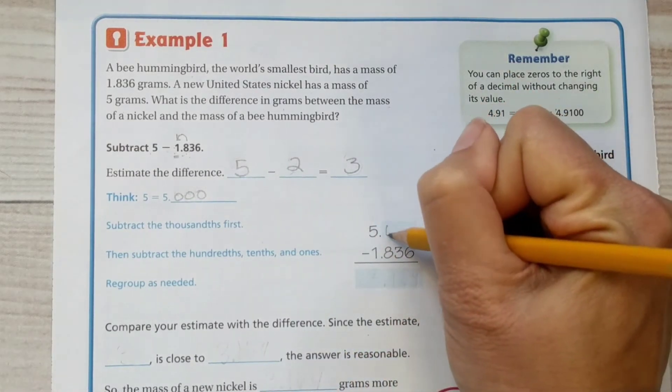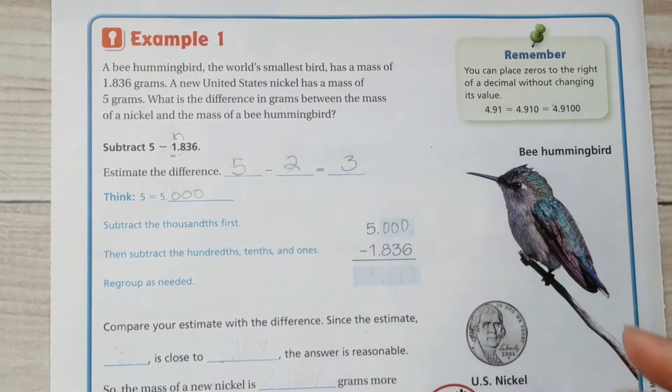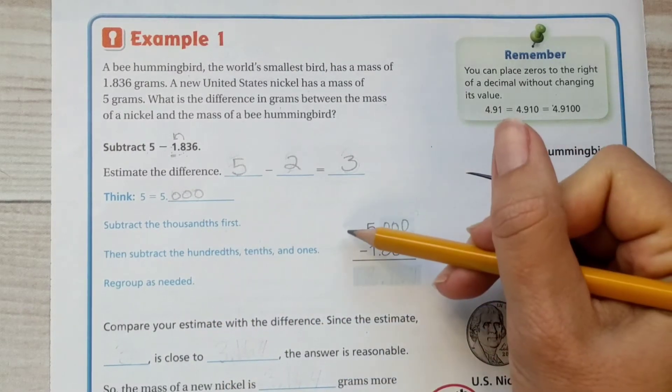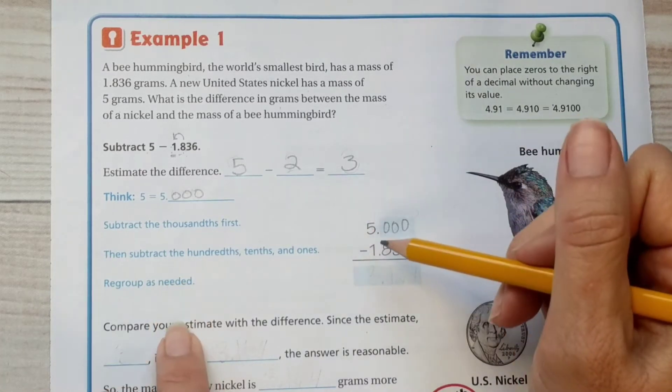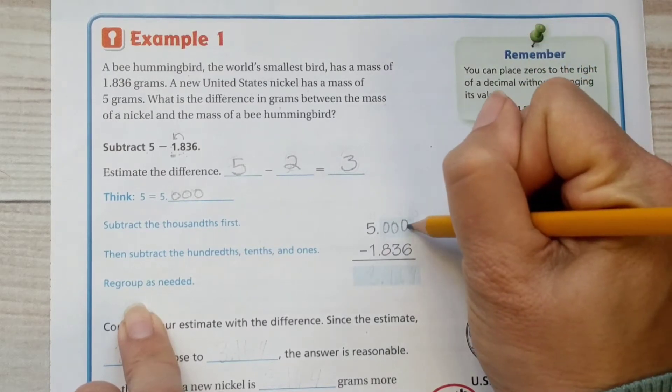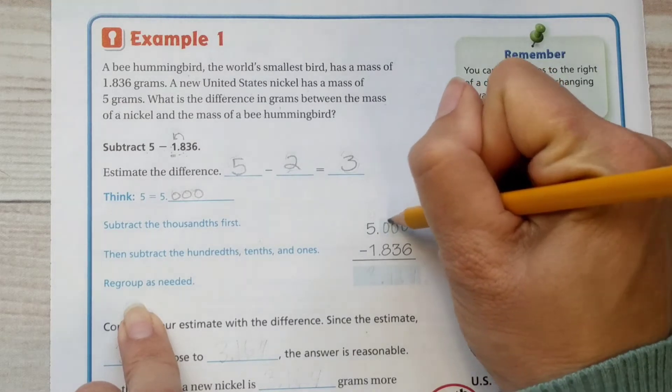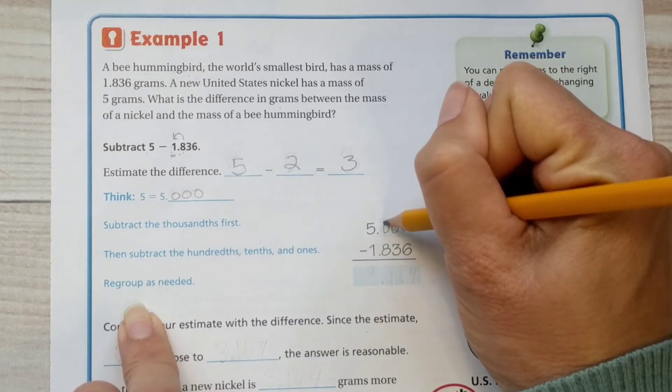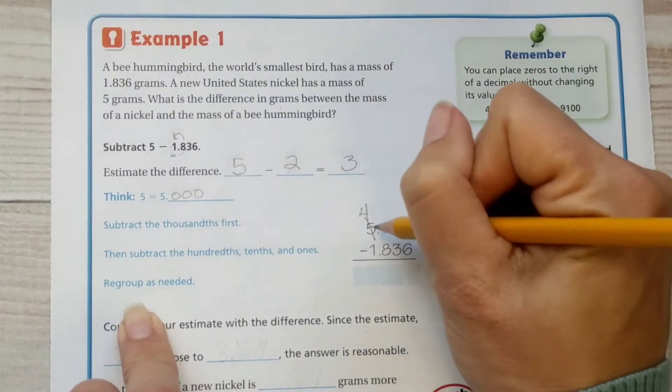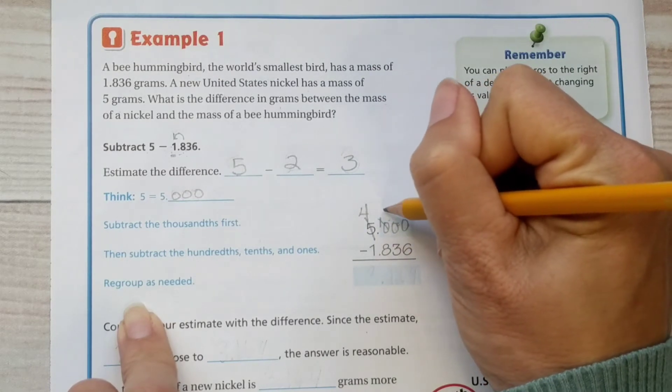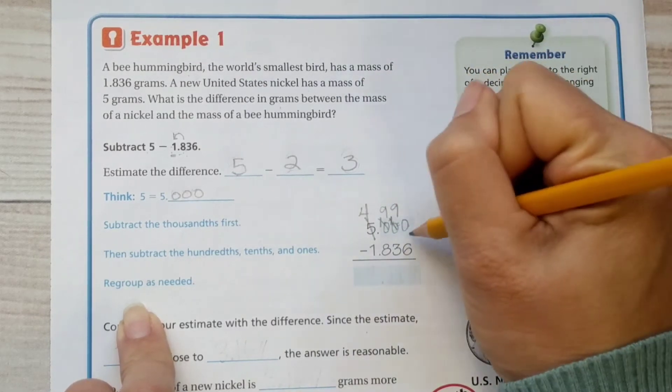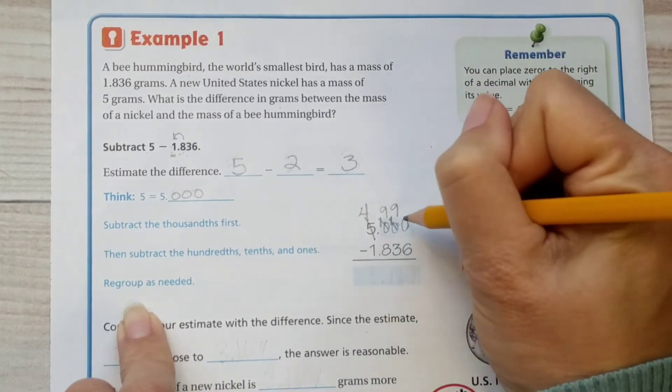We're going to add some zeros out here when we're actually subtracting in order to keep ourselves organized. So we're going to subtract the thousandths first. You always start from the right and work your way left. Then subtract the hundredths, tenths, and ones. Regroup as needed. Subtracting across zeros, we might need a little refresher on that. We can't borrow from the hundredths place or the tenths place. So we're going to have to come all the way out here to borrow for our regrouping, and we make that a 4. Then this becomes a 10. Then we have to borrow for over here. So we're going to change that to a 9, which makes this a 10. But we still have to shift over to the thousandths place. So we're going to borrow again and make this one a 10.